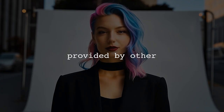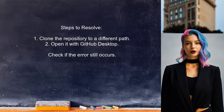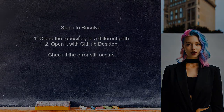Now let's look at the answers provided by other users. An alternative solution suggests that the error may be due to an invalid local path. This could happen if the path contains invalid characters or if you lack the necessary write access. To resolve the issue, try cloning the repository again to a different path, then open it with GitHub Desktop to see if the error persists.